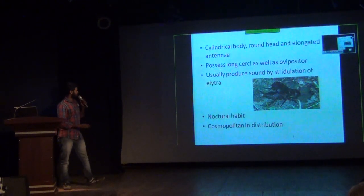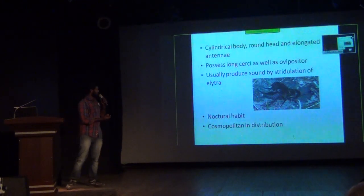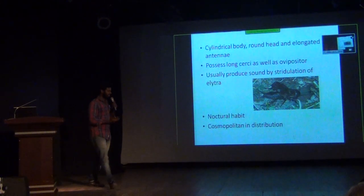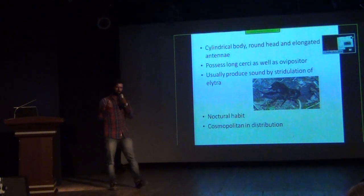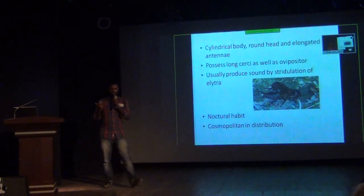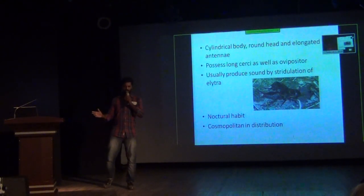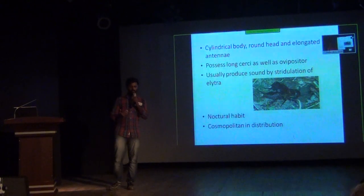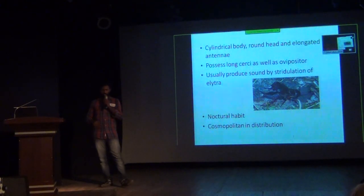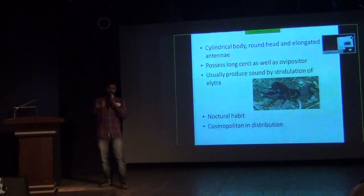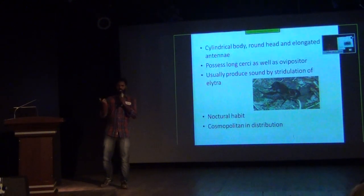Some of the characters include cerci and an ovipositor. The reason I'm not going much into the characters is that if I just go into the characters, you might feel everything is very similar. Because in the case of grasshoppers, they look very similar, but when you go to the generative organ or the microscopic details, you can understand that these are totally different.